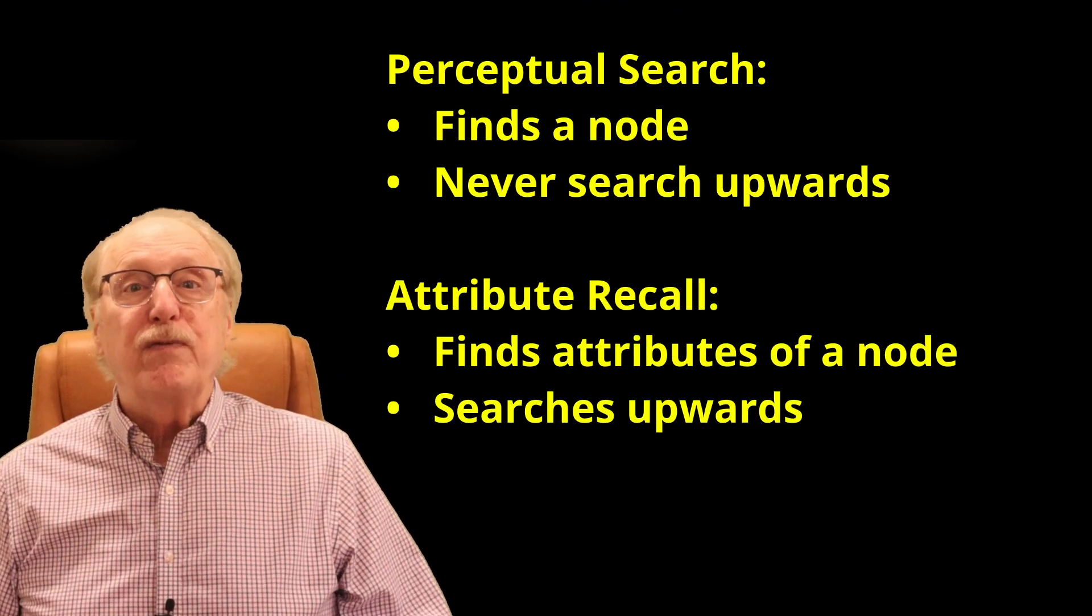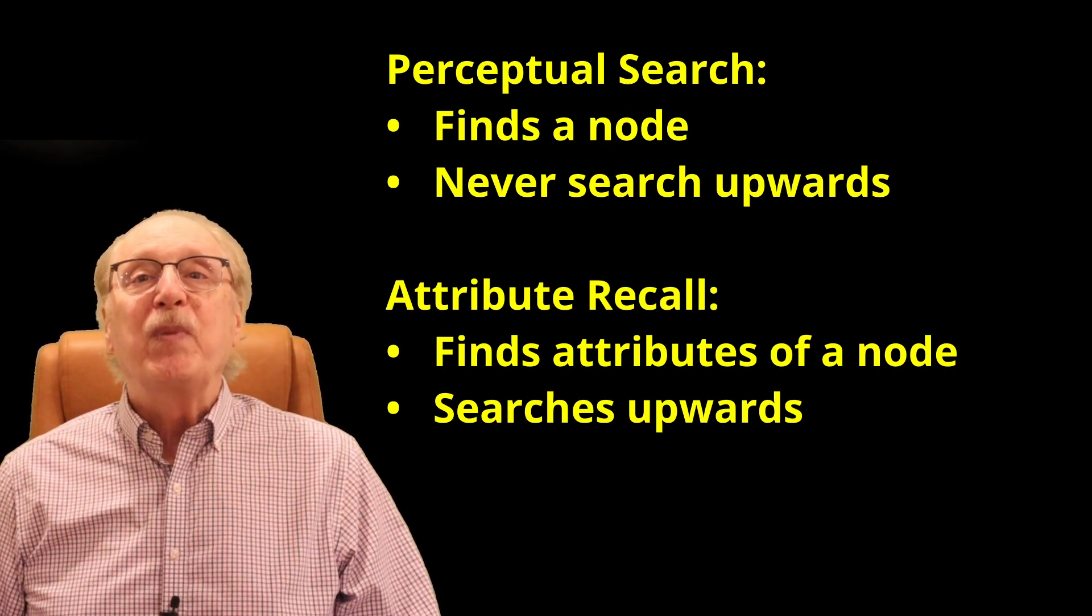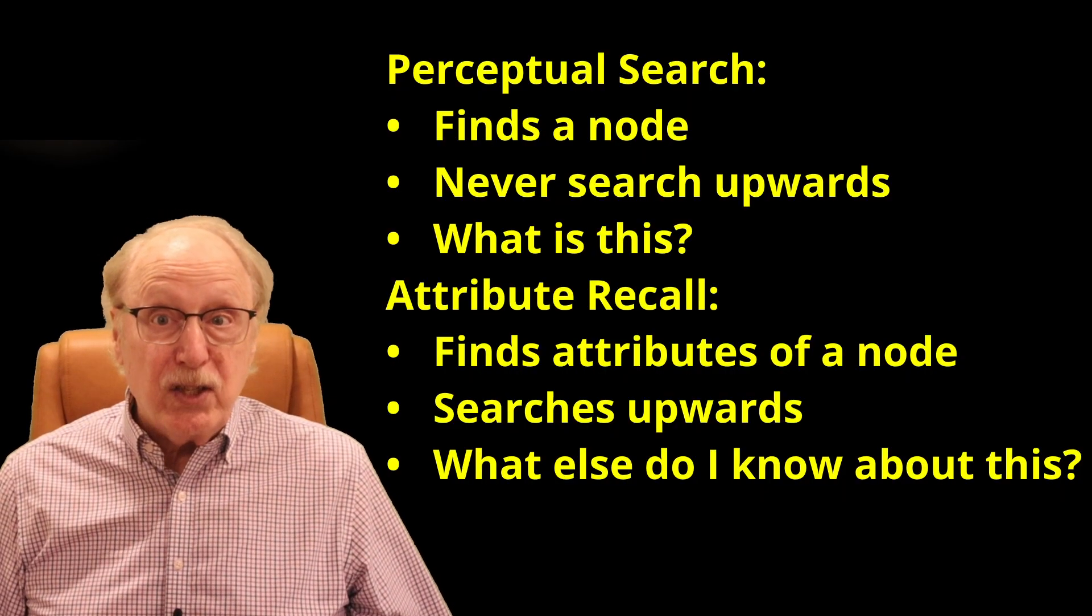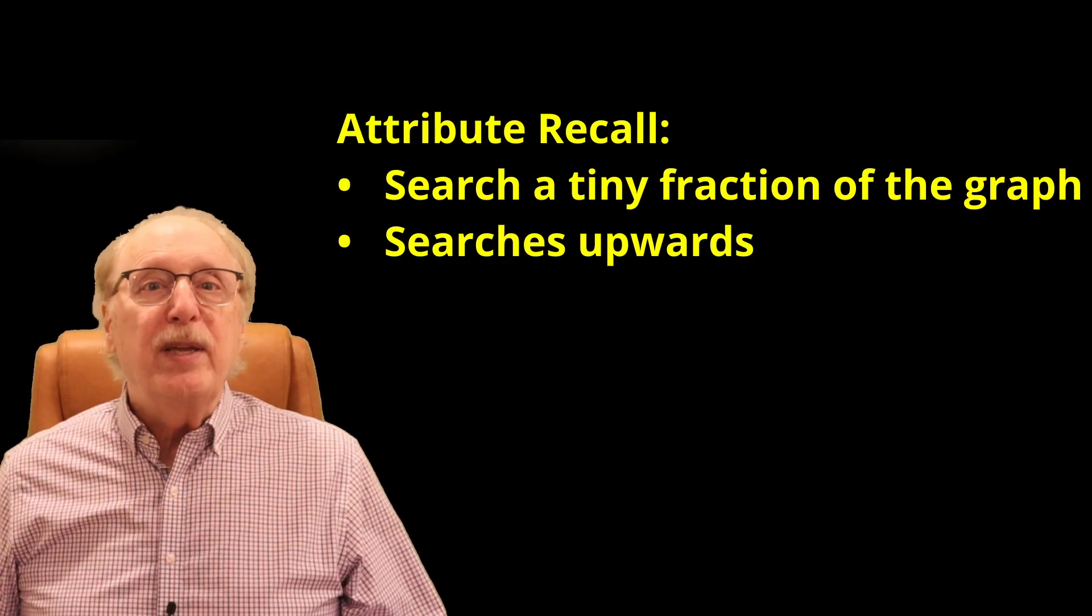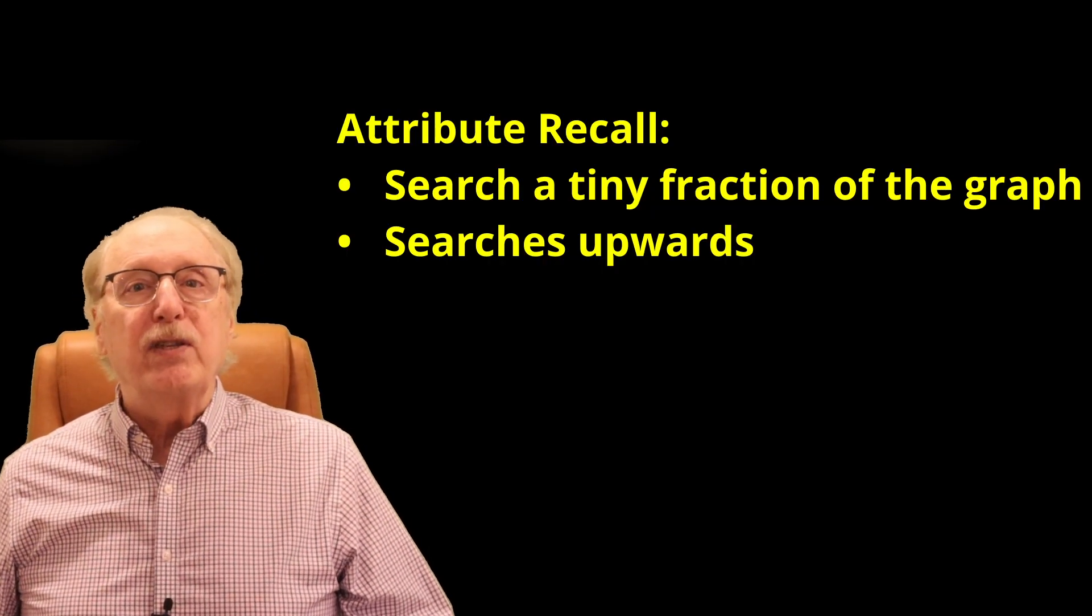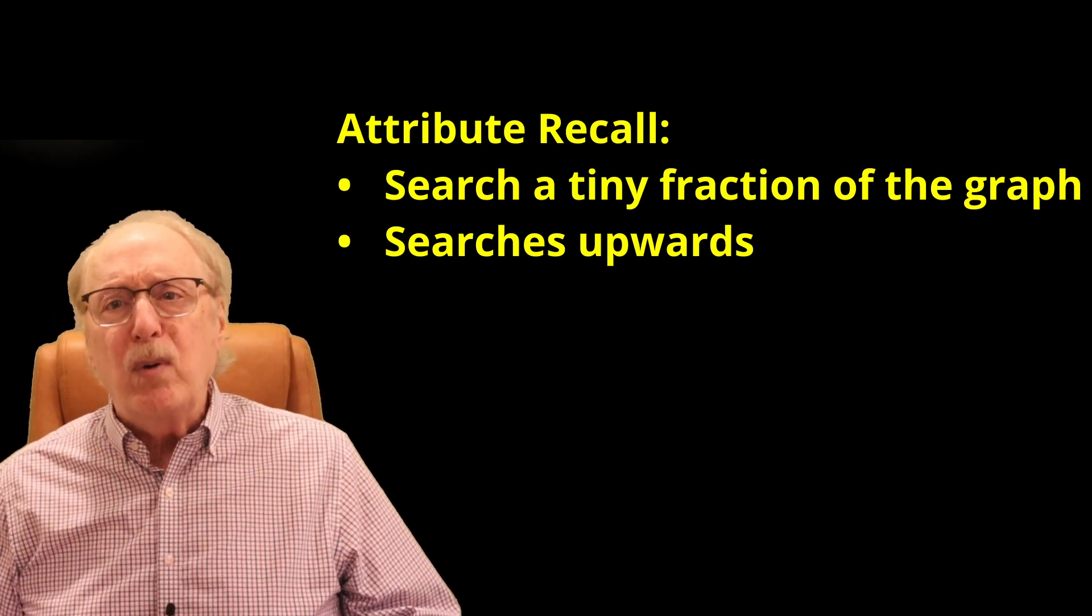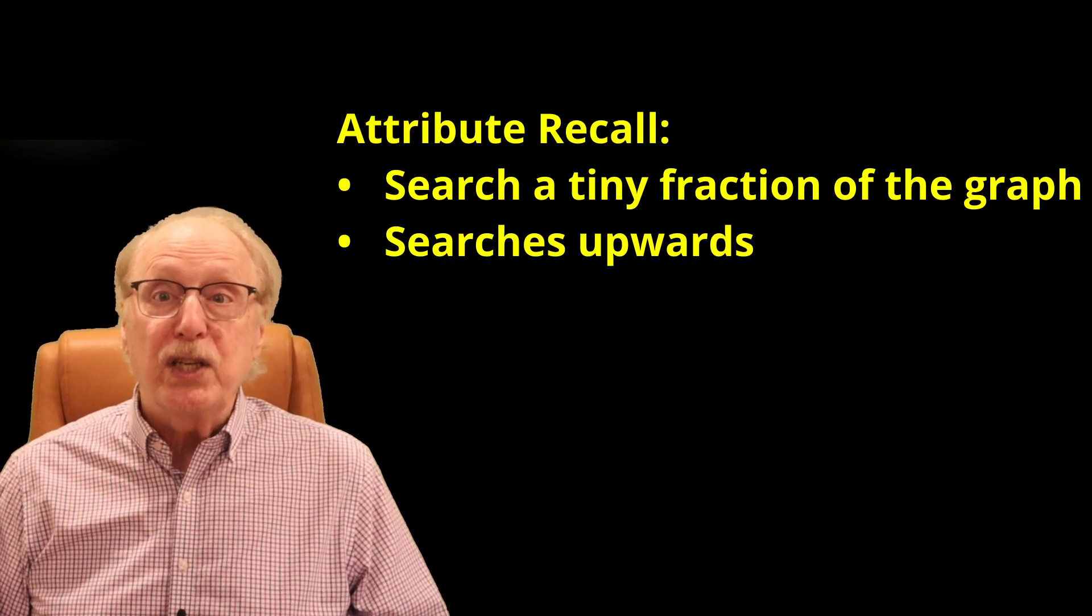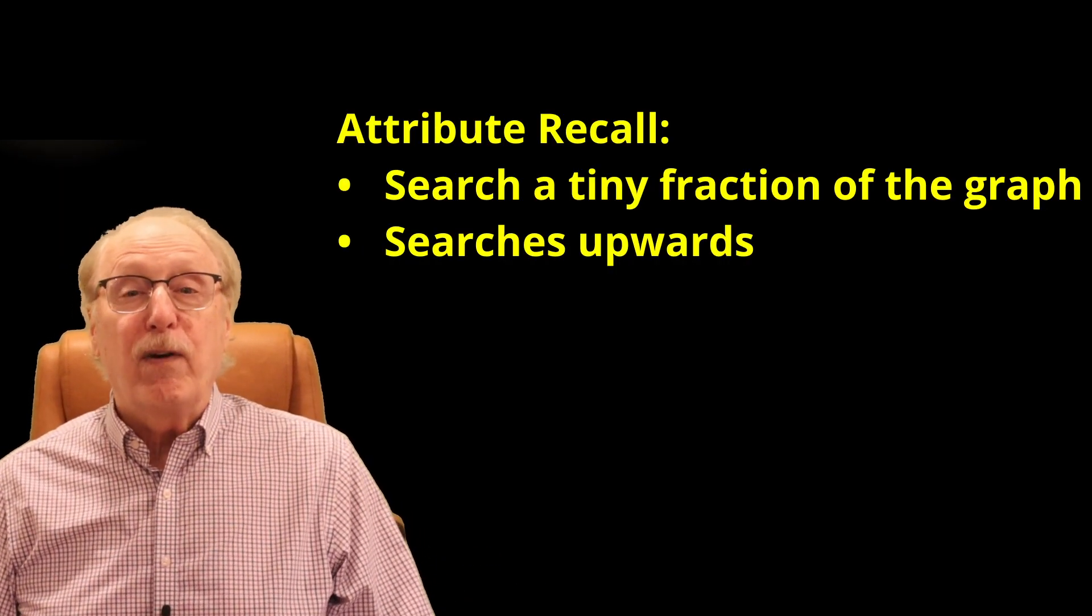So, while perceptual search finds a node, attribute recall fans out and climbs the ancestors. Together they answer the two most important questions the brain faces all the time: What is this? And what else do I need to know about it? And like the perceptual search, the attribute recall searches a tiny fraction of the total graph. There might be a dozen levels of ISA relationships above Fido when your brain might encounter numerous attributes of Fido which are not relevant at the moment. But in my simulations, these levels can be handled at four milliseconds each. So your brain can search exhaustively for all the attributes of anything in a small fraction of a second.